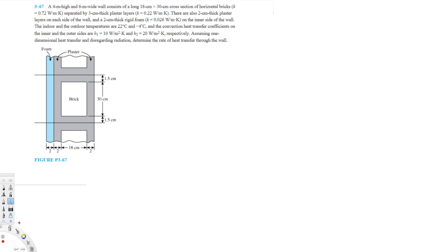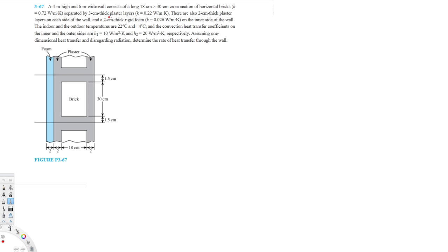This problem involves a 4-meter high and 6-meter wide wall consisting of 18 cm × 30 cm cross-section horizontal bricks separated by a 3 cm thick plaster layer, with given thermal conductivities. There are also 2 cm thick plaster layers on each side of the wall and a 2 cm thick rigid foam layer, with its thermal conductivity also provided. Indoor and outdoor temperatures are 22°C and -4°C, and convection heat transfer coefficients h1 and h2 are given on the inner and outer sides.